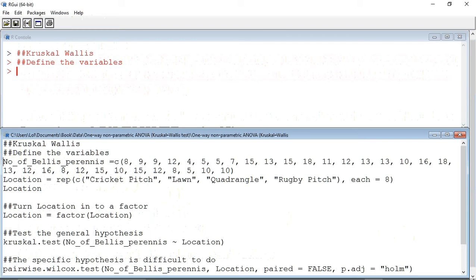So let's start. The first variable we're going to define is the number of bellis perennis, or daisy plants, in each quadrat. Note that I've split this over two lines so that you can see it all on the screen, so I have to press Ctrl R twice to enter this variable.